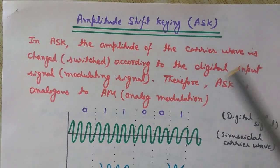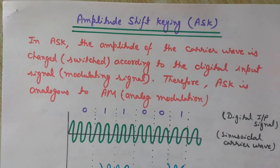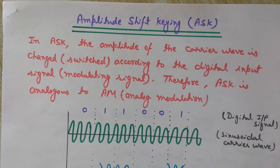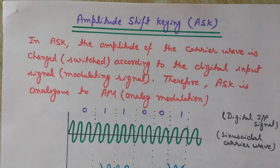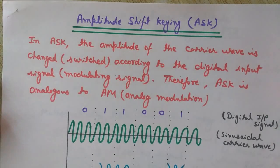In the same way, we can understand the difference between ASK and AM. In amplitude modulation, the amplitude of the analog carrier wave is modulated by the instantaneous values of the modulating signal. Similarly, in ASK the amplitude of the sinusoidal carrier wave is modulated or switched according to the digital input signal. So ASK is analogous to AM because in both cases the amplitude of the carrier wave is varied according to the modulating signal.